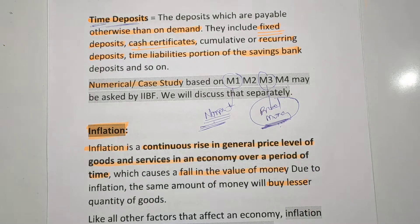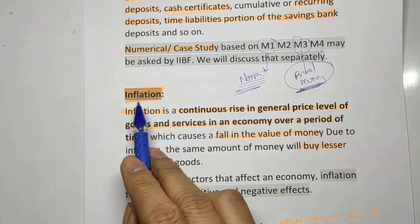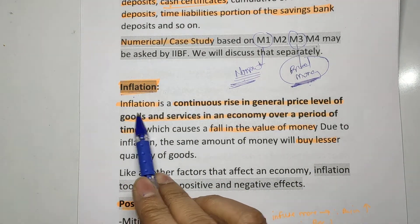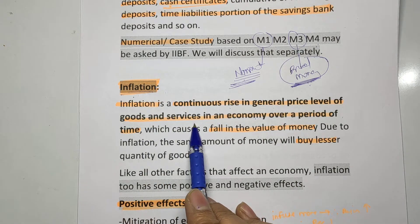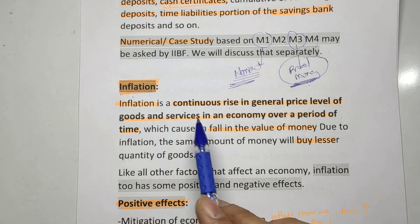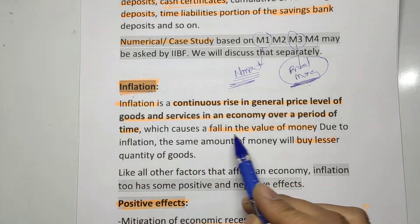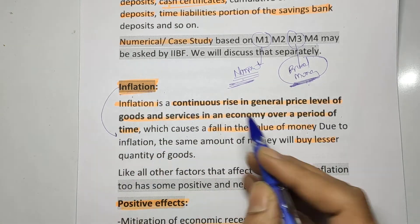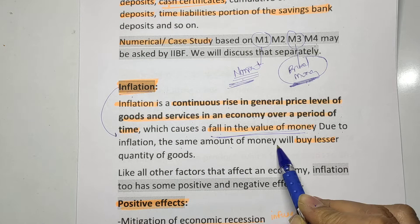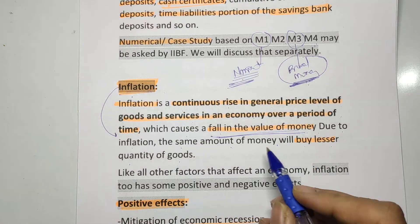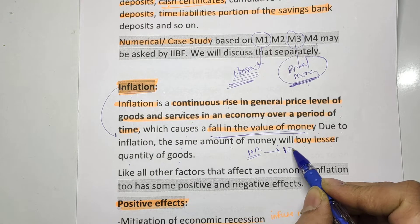Next is inflation — directly linked to our dearness allowance. Inflation is a continuous rise in the general price level of goods and services in the economy over a period of time. Due to inflation, the value of money decreases, and the same amount of money will buy a lesser quantity of goods — for example, a pen that costs 10 rupees may cost 15 rupees after inflation.